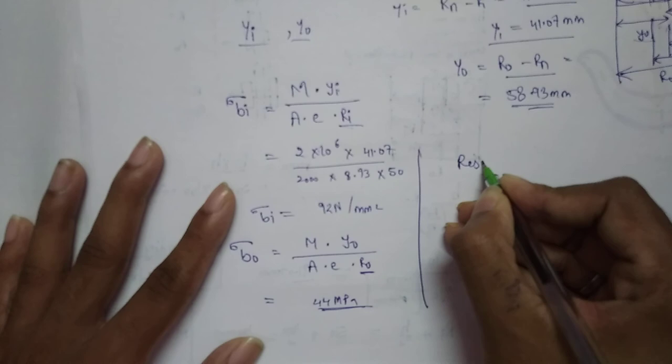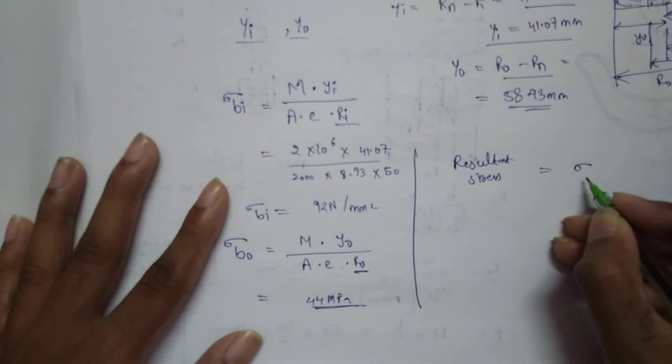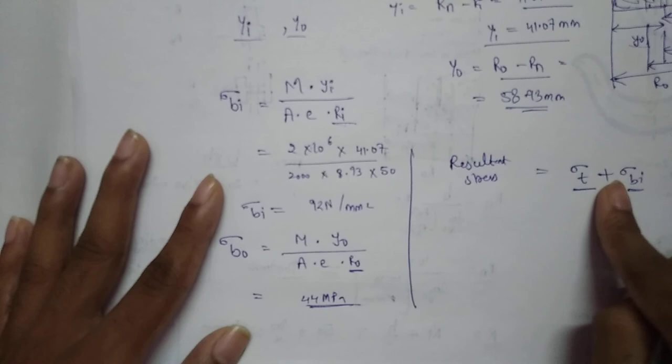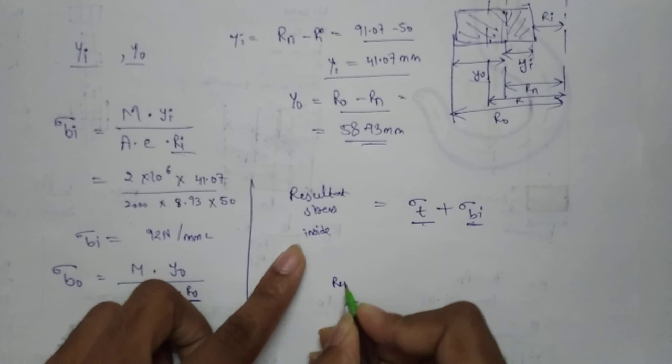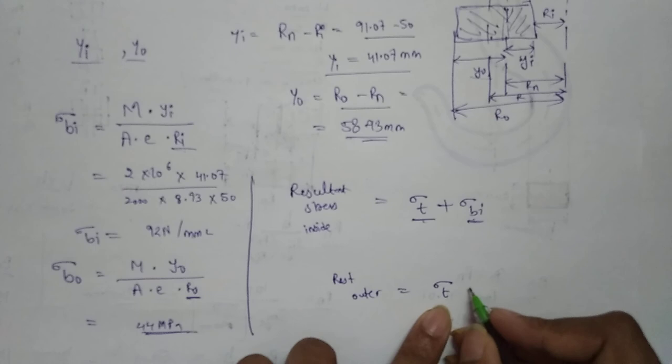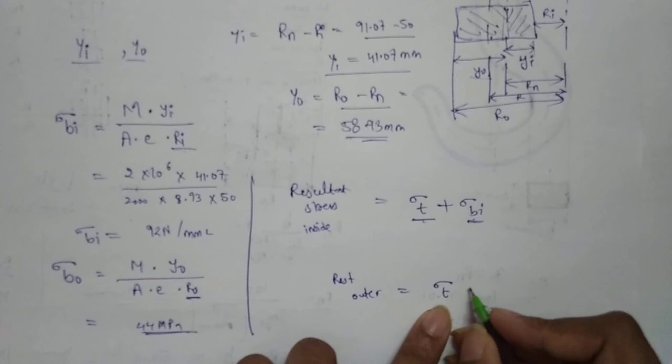The resultant stress is the tensile stress plus the bending stress. For the inner fiber: resultant = tensile stress + bending stress in inner fiber. For the outer fiber: resultant = tensile stress + bending stress in outer fiber.